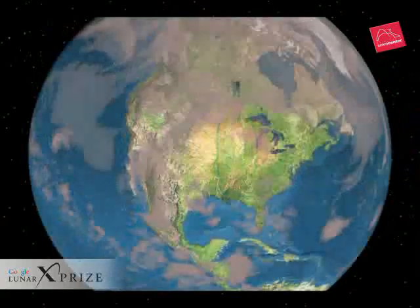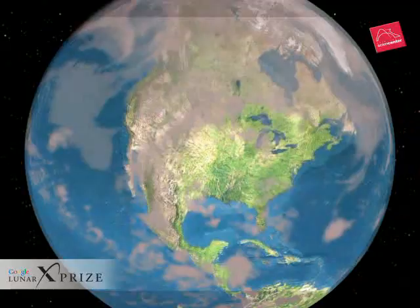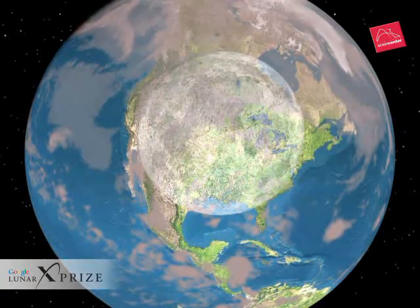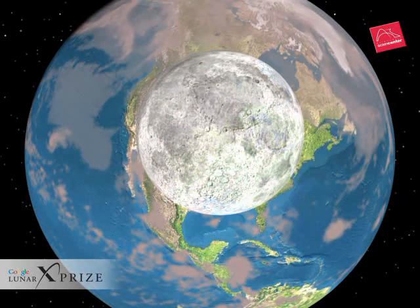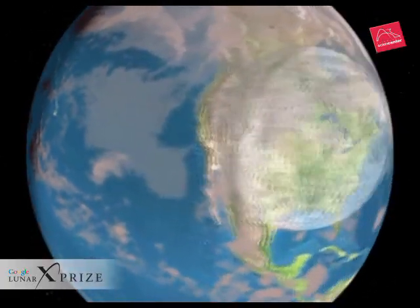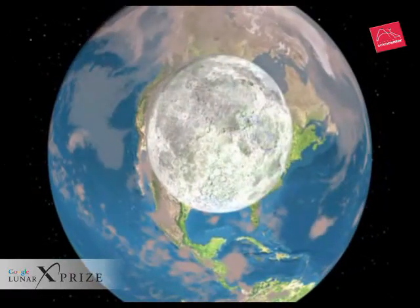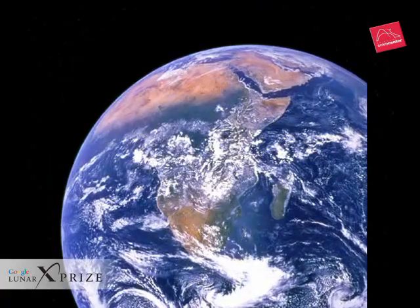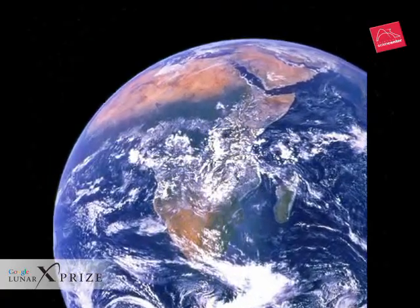The Moon's actual diameter is 2,160 miles, a bit less than the width of the continental United States. The total surface area of the Moon is similar to that of the African continent. Some people refer to the Moon as the eighth continent of the Earth.